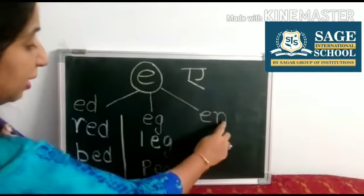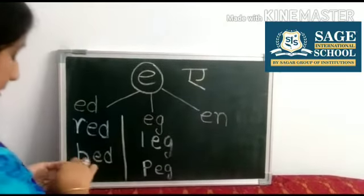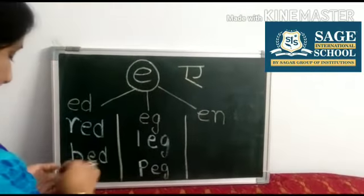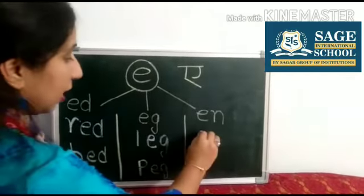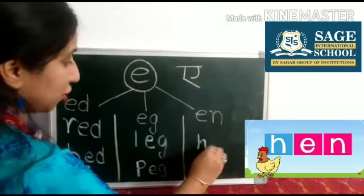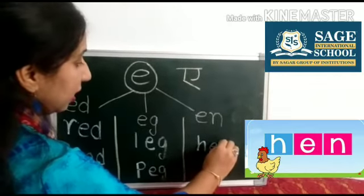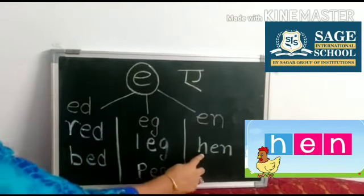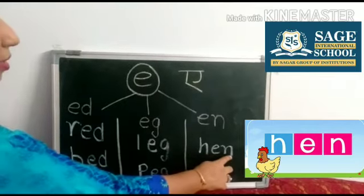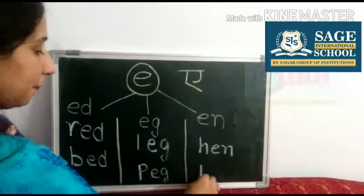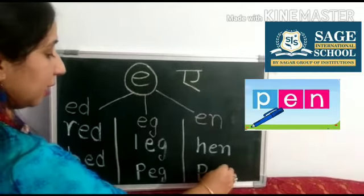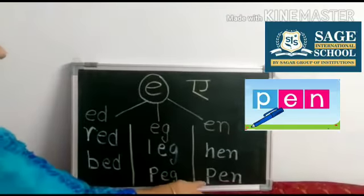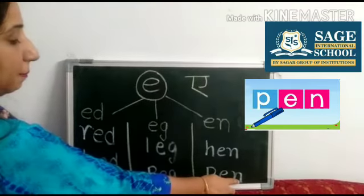With E and N, we can make three letter words. H, E, N — Hen. P, E, N — Pen.